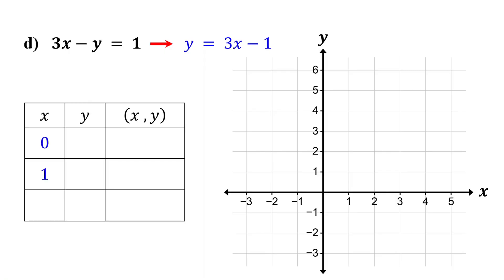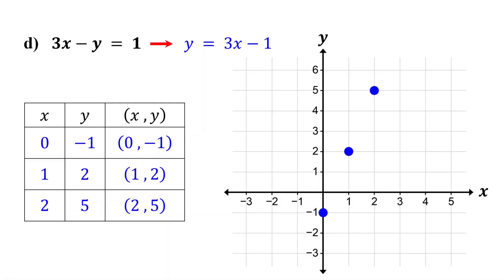You can choose 0, 1, and 2. Next, substitute these values for x into the equation and solve for y. Then plot the points, make sure they line up, and draw a line through them. This is the graph of the equation. Remember, the key steps are to find three points, plot them, and draw a line through them. By following these steps, you can graph any linear equation. There are also other methods to graph linear equations — check the links in the description.